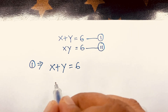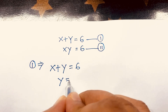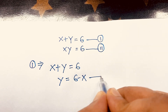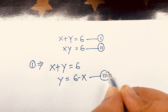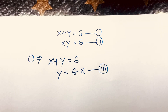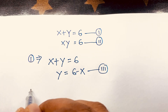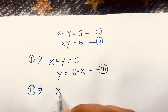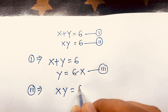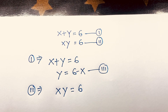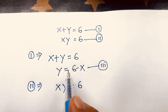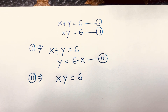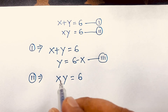From the first equation, x plus y equals 6, we can rearrange to get y is equal to 6 minus x. This is our third equation. Now we'll substitute this into the second equation, x times y equals 6.